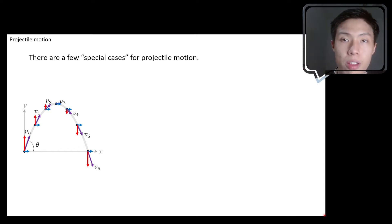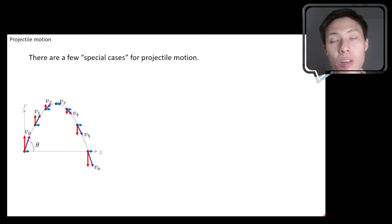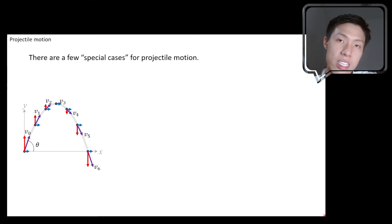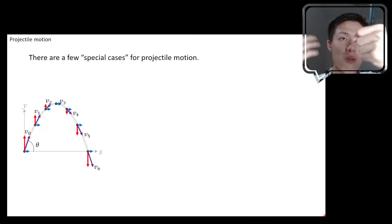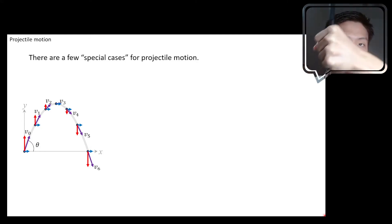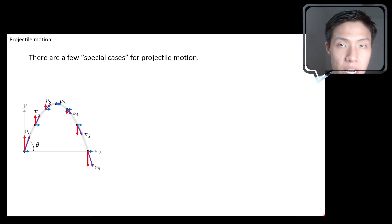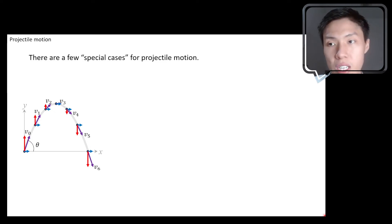In the previous video, we learned an overview of projectile motion. Now I'm going to discuss a few special cases for projectile motion. Projectile motion is something that you launch into the air. When it's in the air, there are no forces acting on it except for gravity — the only force acting on it. Because the only force acting on the object is gravity, the motion traced by the object will be a projectile path, so it's called projectile motion.